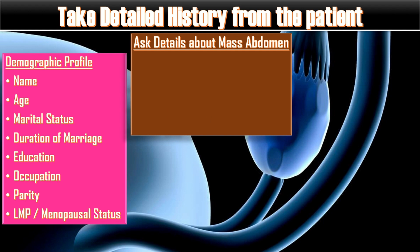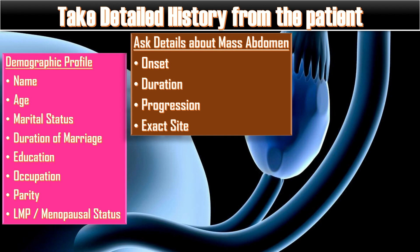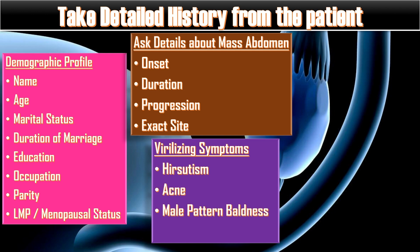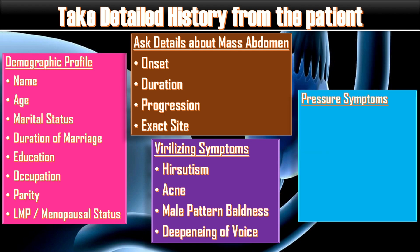Ask about its onset, duration, progression, and exact site. Certain questions regarding virilizing symptoms are needed to be asked in order to assess the nature of the mass — like hirsutism, acne, male pattern baldness, and deepening of voice.